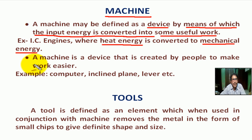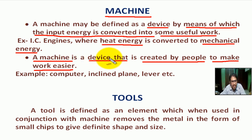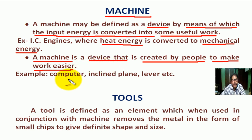Otherwise, we can define a machine as a device that is created by man to make work easier. Anything that reduces human effort is a machine. Examples include a computer, inclined plane, lever, etc.